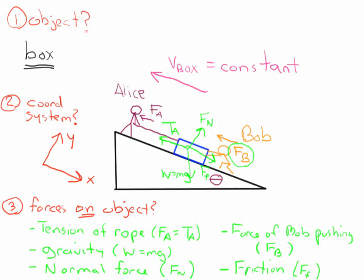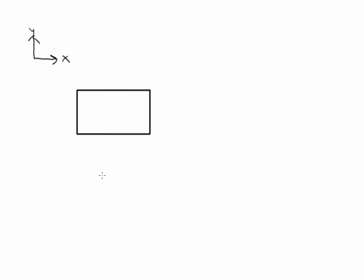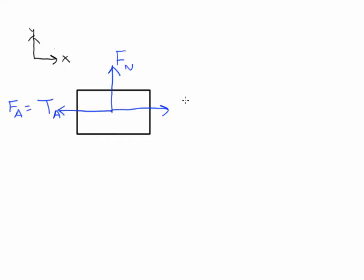Now we can go ahead and draw the free body diagram. Here's our box. We've chosen our axes: the x-axis points down the slope, and the y-axis points perpendicular to the surface of the slope. The normal force points directly up. To the left, we have the tension T sub A due to Alice pulling. To the right, we have the force of friction. Bob is pushing to the left, so we draw F sub B in that direction. Finally, we have the force due to gravity, Mg, which is the only one pointing off at an angle in this coordinate system, at angle theta.